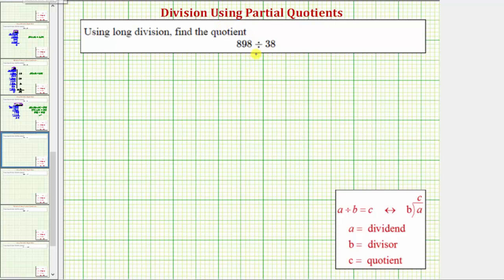The first step is to write the quotient in long division form, which is this form here. We have 898 divided by 38. And because we're using the method of partial quotients, we'll draw a vertical line to the right to keep our work organized. We'll write the partial quotients on the right side of this vertical line.